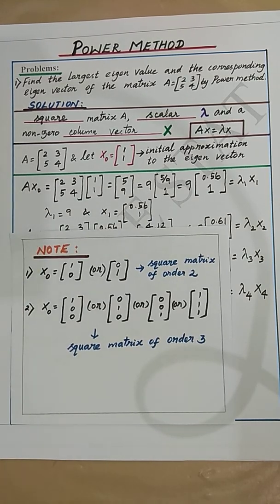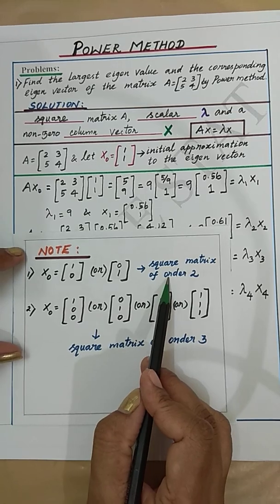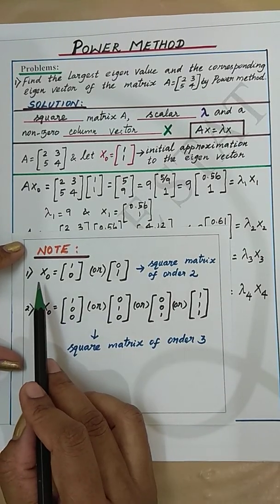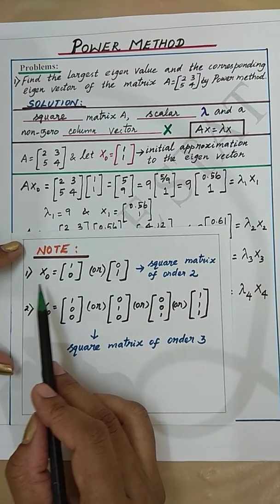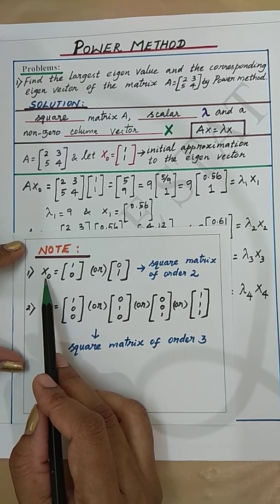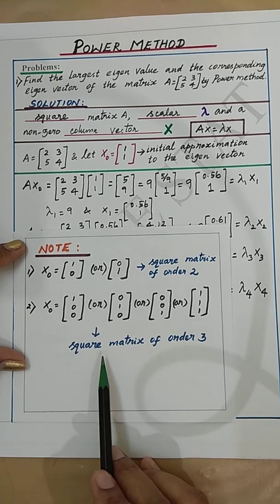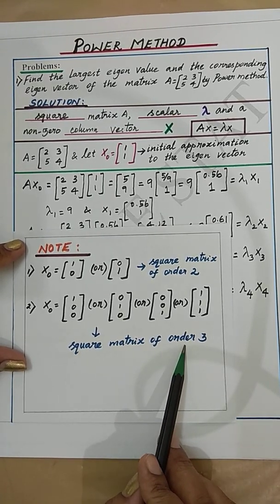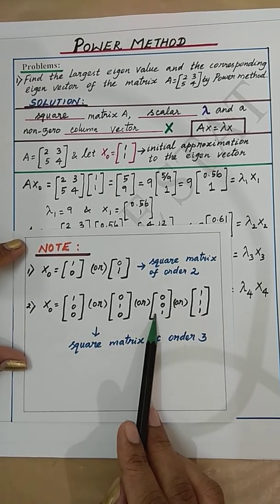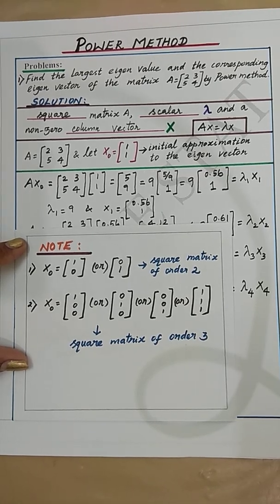Note that for a square matrix of order 2 the initial approximation to the eigenvector can also be chosen as X0 equal to [1; 0] or [0; 1]. Similarly, for a square matrix of order 3 one of these can be chosen as X0.